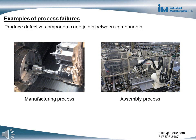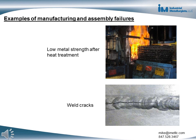There can also be failures during manufacturing and assembly processes. This is when a manufacturing or assembly process produces defective components and joints between components. The purpose of the failure analysis is to help identify the cause of the defect. Examples of manufacturing and assembly failures are metals with low strength after heat treatment and cracks in a weld joint.